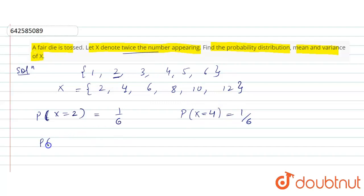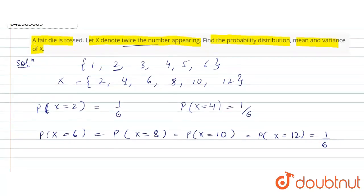So, probability of x as 6 equals to probability of x equals to 8 equals to probability x equals to 10 equals to probability x equals to 12. So, it is 1 by 6 because this is the probability distribution of x.